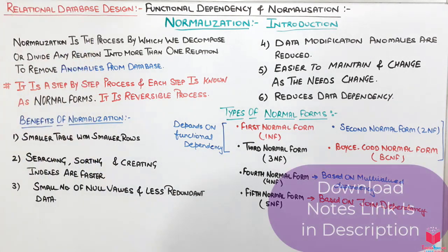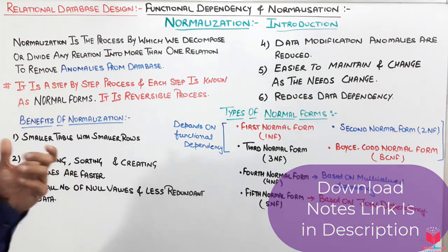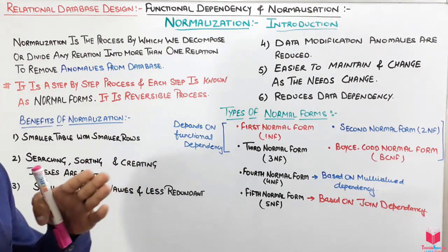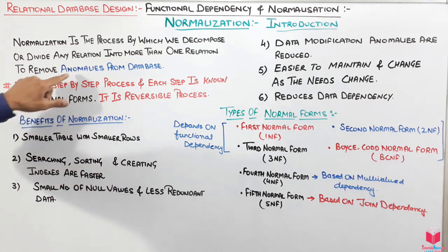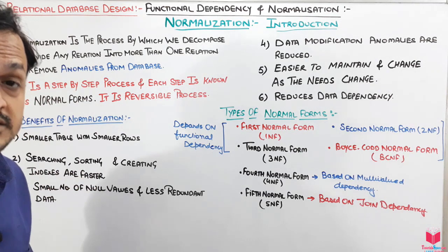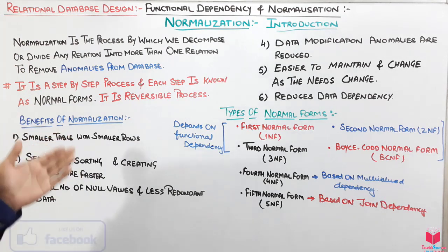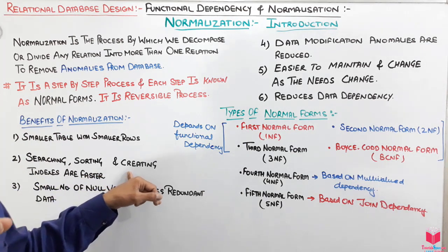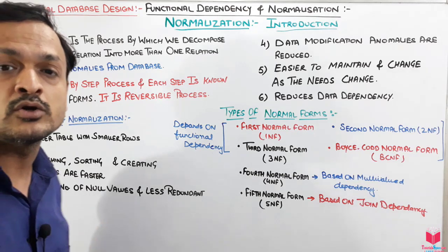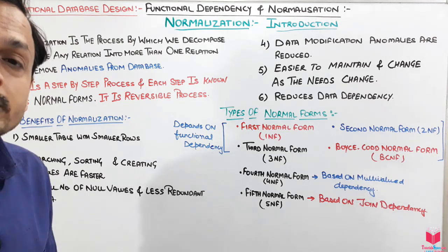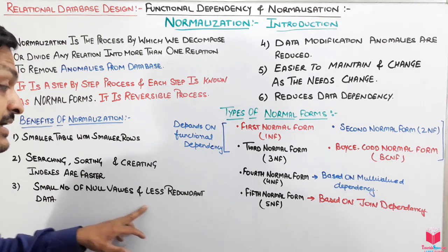Let's see the benefits of normalization. First, we get smaller tables with fewer rows, because we remove anomalies by dividing the table. Second, searching, sorting, and creating indexes are faster. Indexes are a methodology to quickly search data, and after normalization we can apply different types of indexes over the tables.